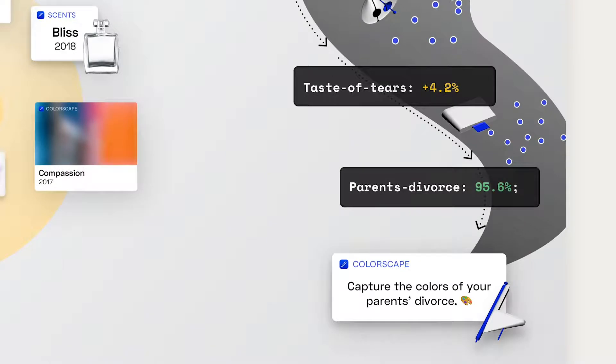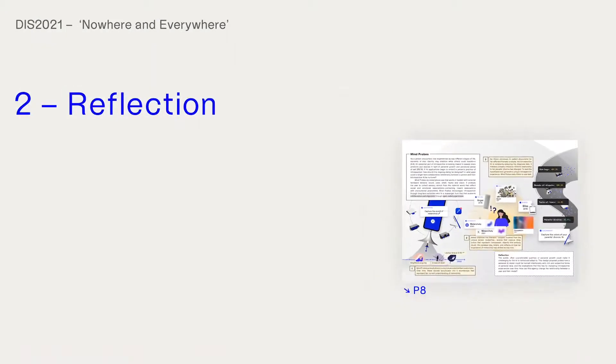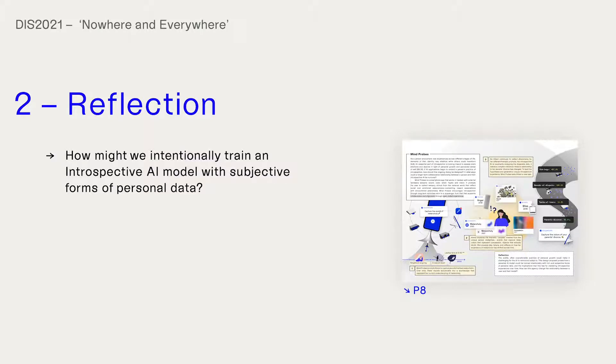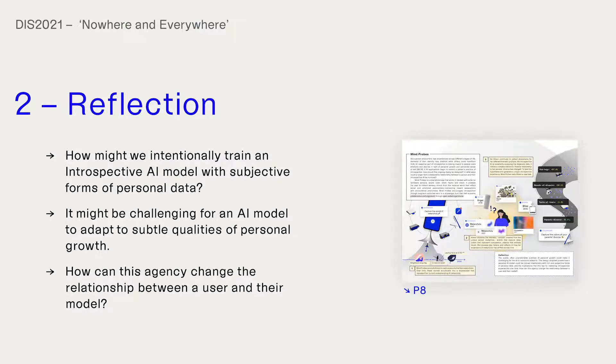The system infers that Alison's relationship to her parents' divorce has changed. To test this hypothesis, Mindprobe sets Alison a new task. This design proposal probes on how a personal AI model could be trained intentionally with rich and subjective forms of personal data and the implication that this has for mediating introspective experiences over time. We are interested in how the subtle and unpredictable qualities of personal growth would make it challenging for the AI to adapt. How can this agency change the relationship between a user and their model?